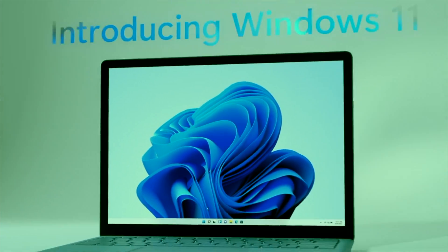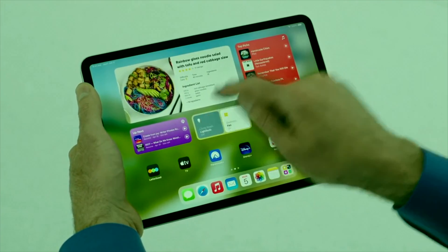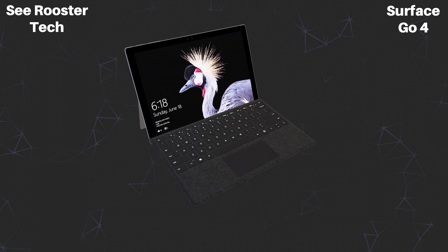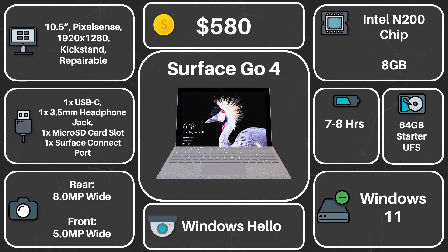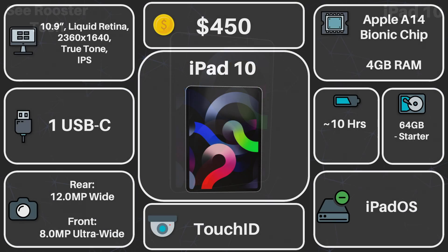The operating systems. Windows is purpose-built for versatility — you can literally do anything on that operating system with the Surface Go, given that it can run it. While iPadOS is very streamlined and simplified, meaning it's very well-optimized for everything it's compatible with. All in all, the decision really comes down to you and your needs. If you want a more laptop experience and prefer the freedom of Windows, or could use another computer, get the Surface Go 4. However, if you want a more tablet experience, prefer the optimization of iPadOS, and already have a computer, get the iPad 10. This is just my opinion, and there could be many other reasons to buy either device.